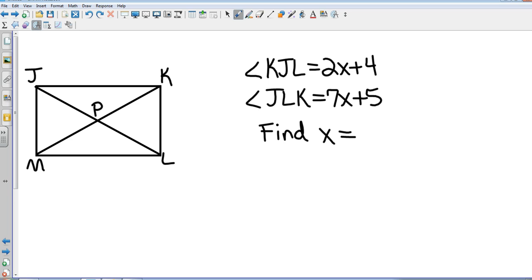If you are given that JKLM is a rectangle, and you're given angle KJL, which is right here, is 2x plus 4,